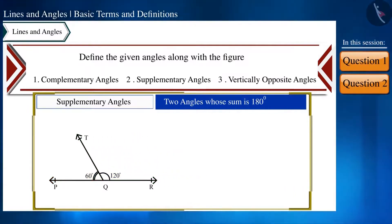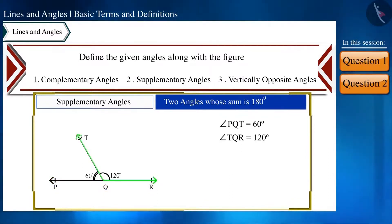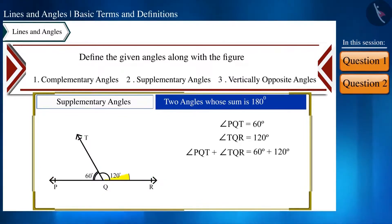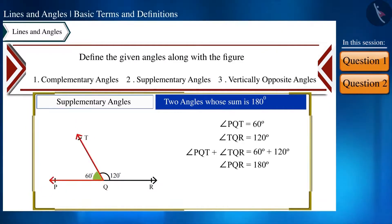For supplementary angles: angle PQT is 60 degrees and angle TQR is 120 degrees. Adding these gives 180 degrees, so angle PQT and angle TQR are supplementary angles.